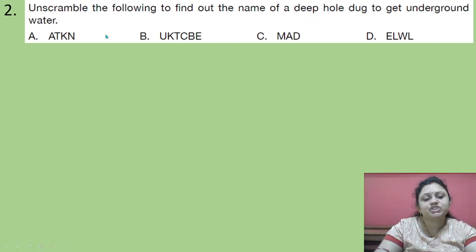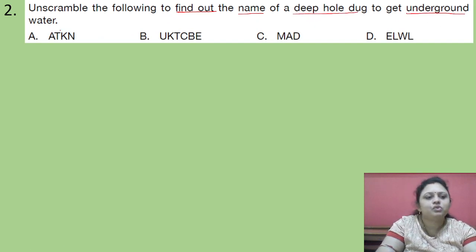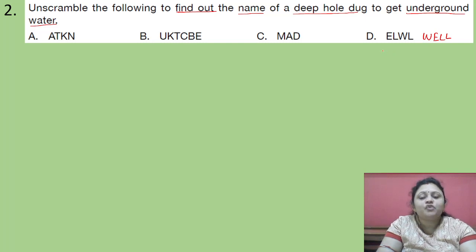Coming to the next question. Unscramble the following to find out the name of a deep hole dug to get underground water. So four options are there. So we have to just unscramble to know the correct answer. So if we unscramble this last option, we will get W-E-L-L that is well. And you know from where we get the underground water, right? So correct answer is option D.